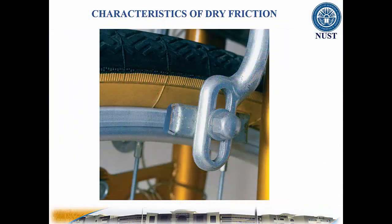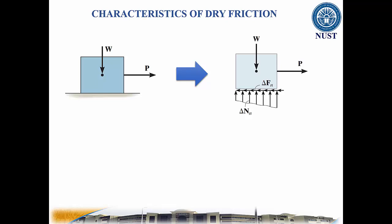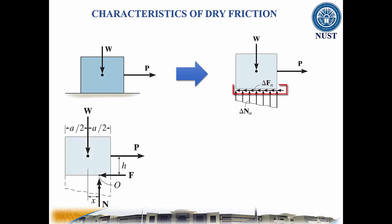In designing a brake system for a bicycle, a car, or any other vehicle, it is important to understand the frictional forces involved. Friction is defined as a force of resistance acting on a body which prevents or retards slipping of the body relative to a second body. Experiments show that frictional forces act tangent or parallel to the contacting surface in a direction opposing the relative motion or tendency for motion.